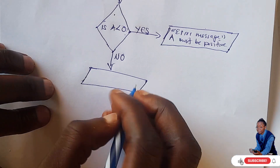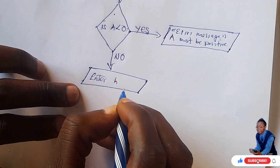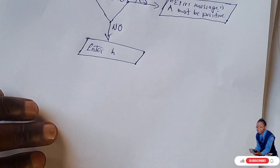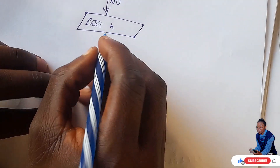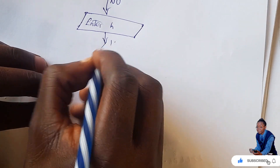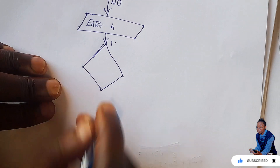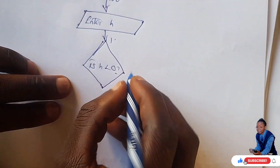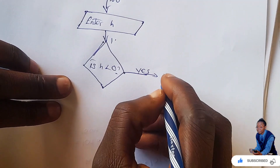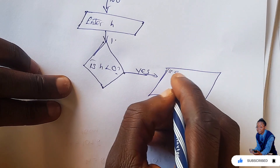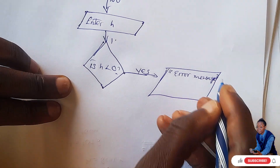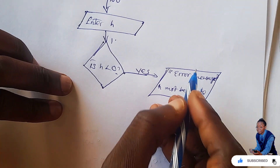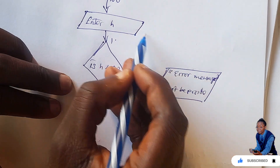Enter H — again H has conditions. It's saying if H is less than zero, so you draw another diamond shape and ask: is H less than zero? If the answer is yes, print error message: 'H must be positive'. If you wanted to re-enter, you'd loop back to the entry point, but otherwise just proceed.